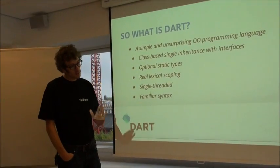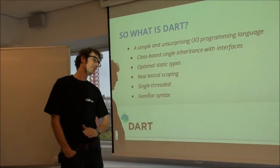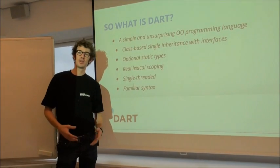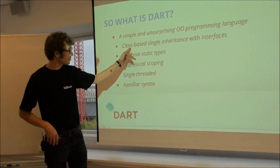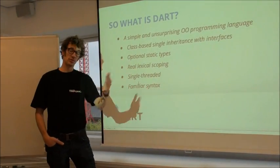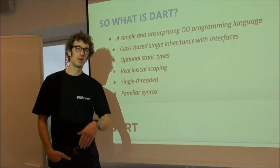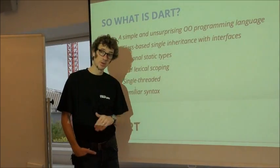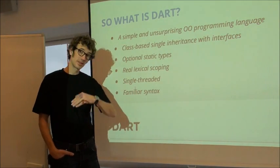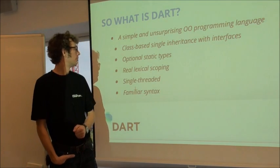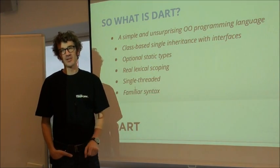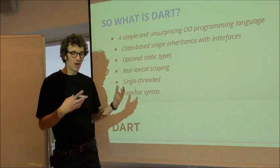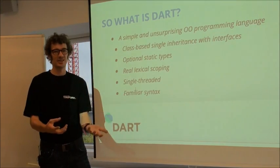Getting down to what Dart really is: it's a simple object-oriented programming language. Everybody who's programmed in Java, C#, Ruby, or similar languages will immediately recognize it as very straightforward. It has class-based single inheritance — that's one place where it diverges from JavaScript's notion of prototypes and delegation. It has optional static types, which is something they brought forward from the Strongtalk project — also similar to how Objective-C has typing. It has real lexical scoping, which is a improvement over JavaScript's strange scoping issues.